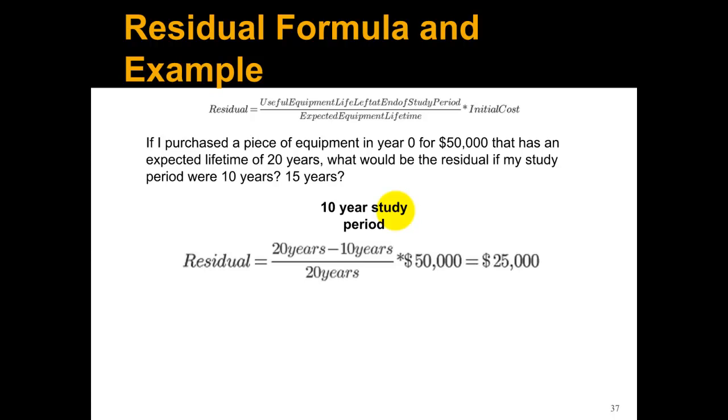Let's look at the 10-year study period. The numerator here is the useful equipment life at the end of the study period. Well, it's the total equipment life, 20 years, minus how long it's been used for the study period. For a 10-year study period, it's been used for 10 years, divided by the expected equipment lifetime, which is 20 years. Then we multiply by the initial cost, which is $50,000, so it's $25,000. This makes sense because we've used the equipment for half of its expected lifetime, so half the cost is the residual.